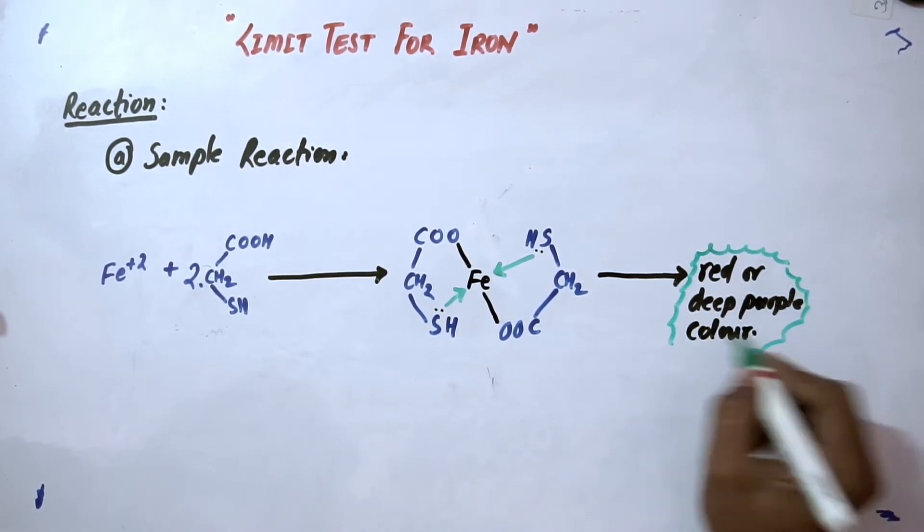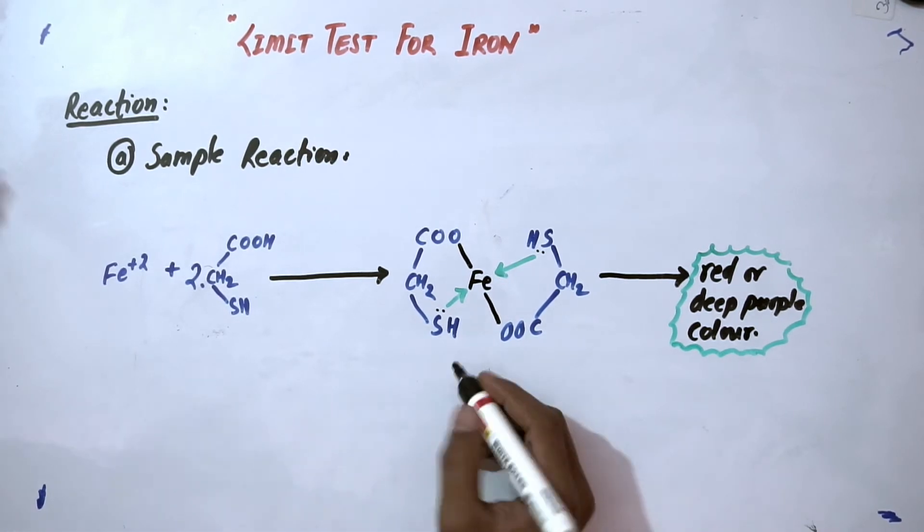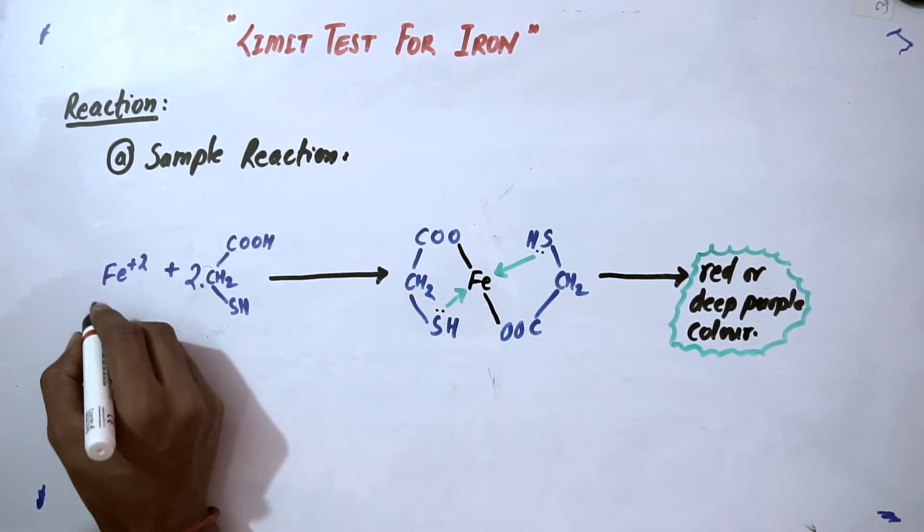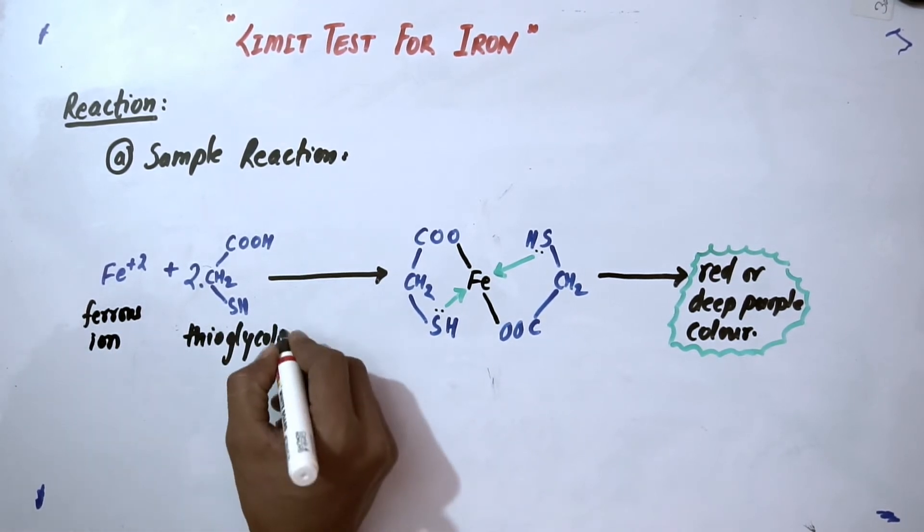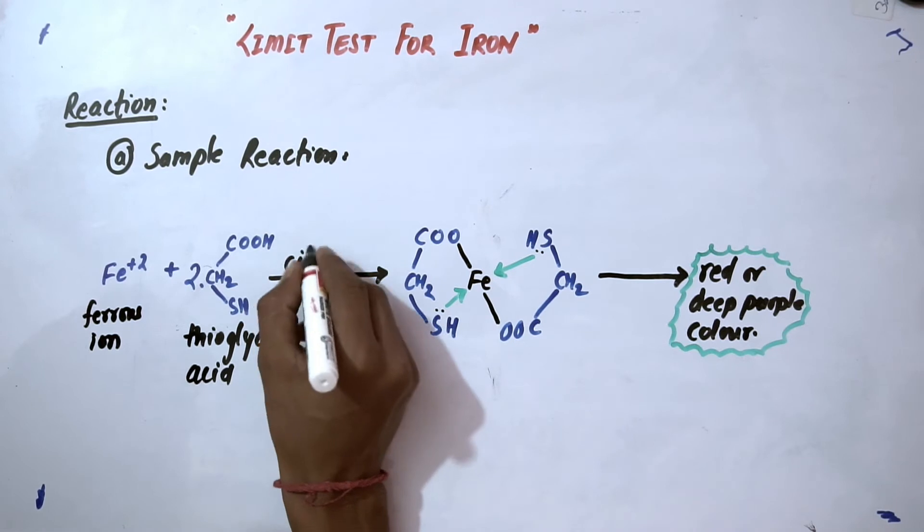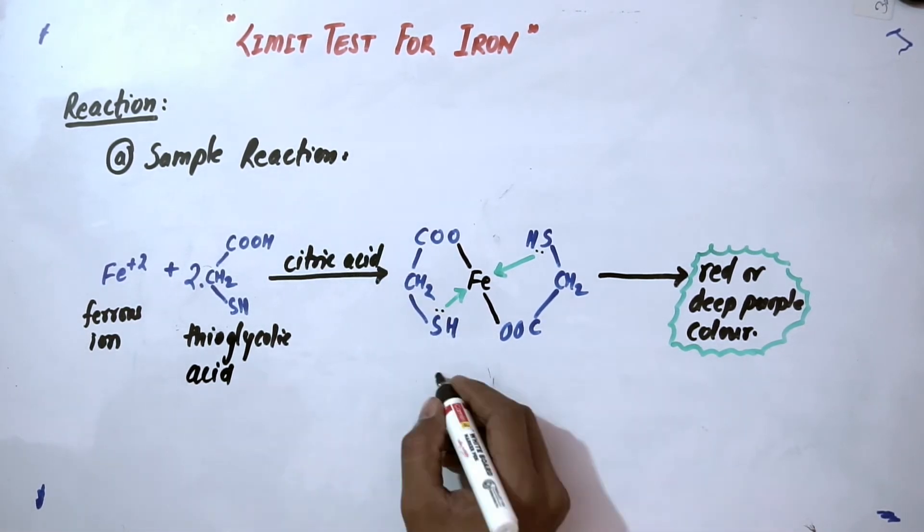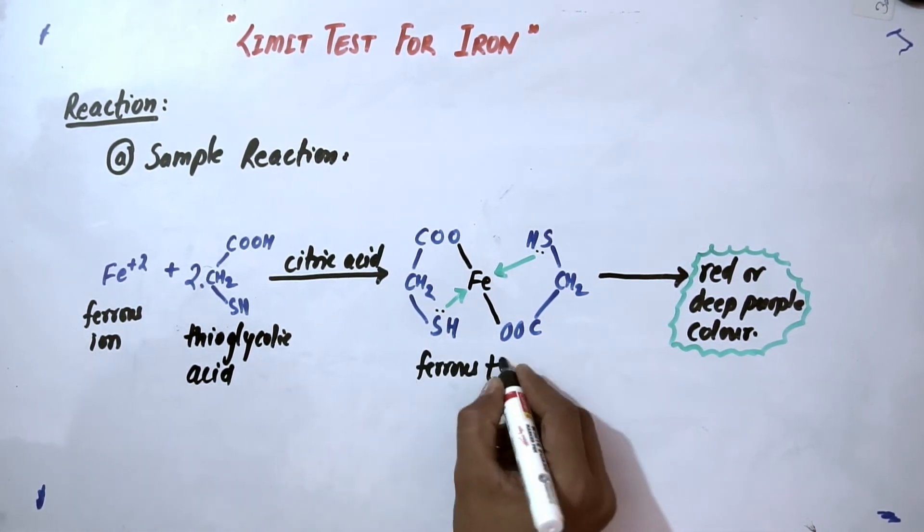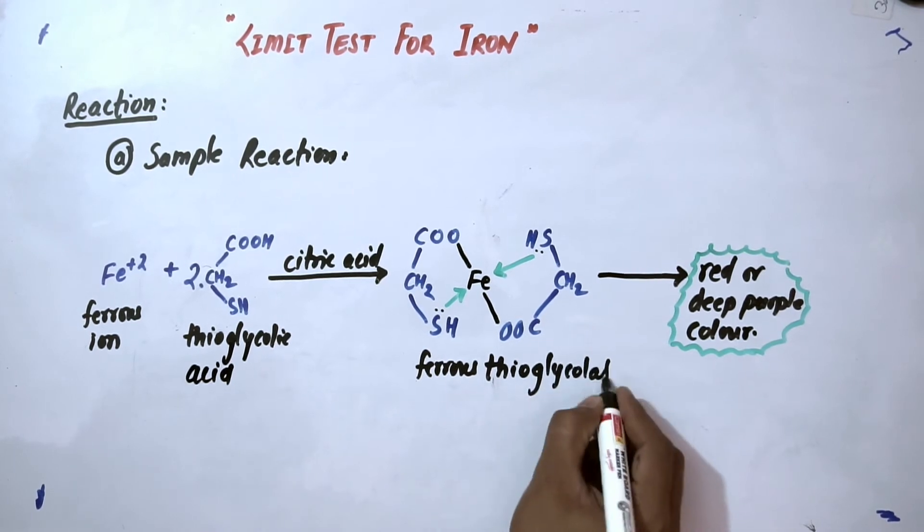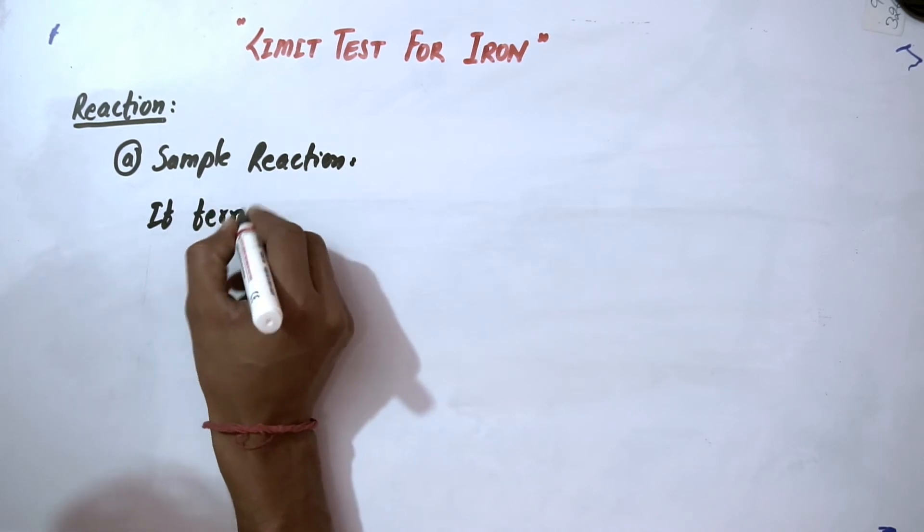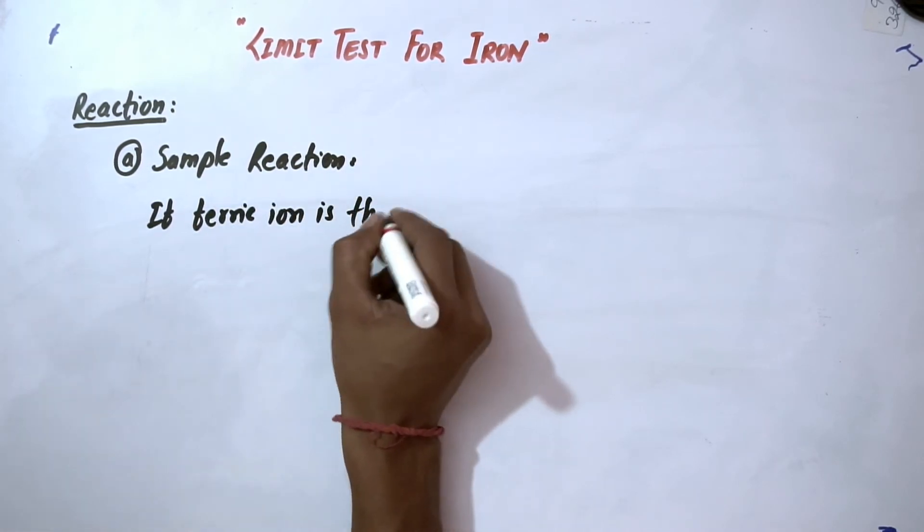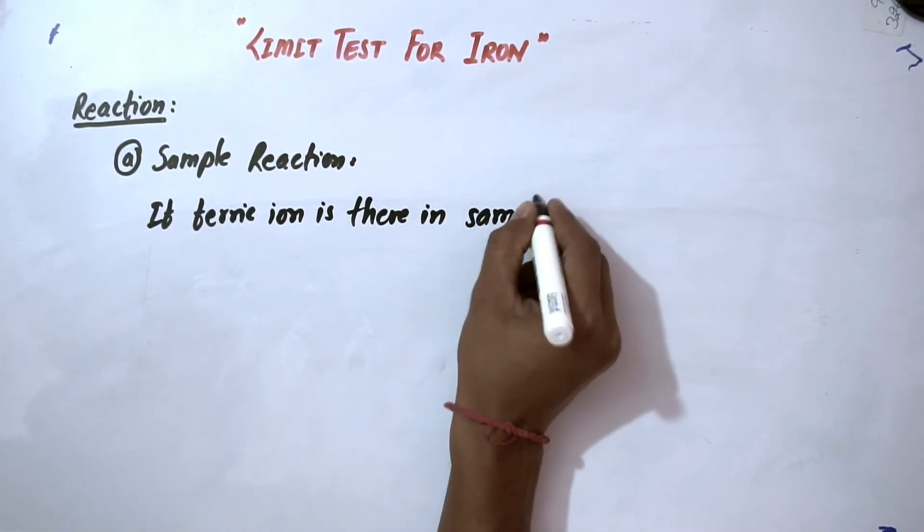Now we will write this reaction in word format. This is ferrous ion, this is thioglycolic acid, here there will be citric acid, and this is ferrous thioglycolate complex. You have to write the name and reaction, otherwise your marks will be reduced. Suppose there is a condition that if iron is present in ferric form, then what will happen?